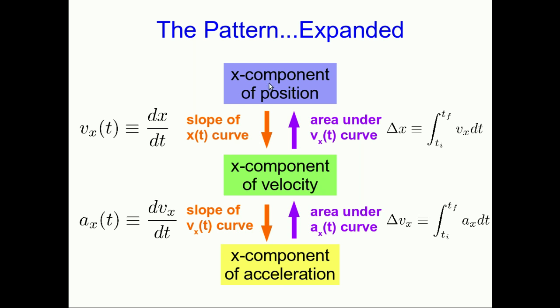So this completes our picture of the mathematical relationship between x and v and a. We know that x, if we take the slope of that curve, we get v, and the slope of that gives us a. But now the area under the a curve carries us back to v. Well, it's really delta v. And the area under that carries us back to x. Well, it's really delta x. And this is a manifestation of something you may eventually learn as the fundamental theorem of calculus.